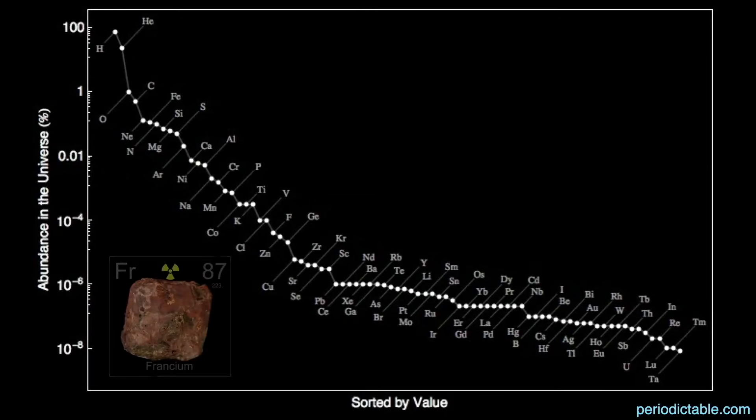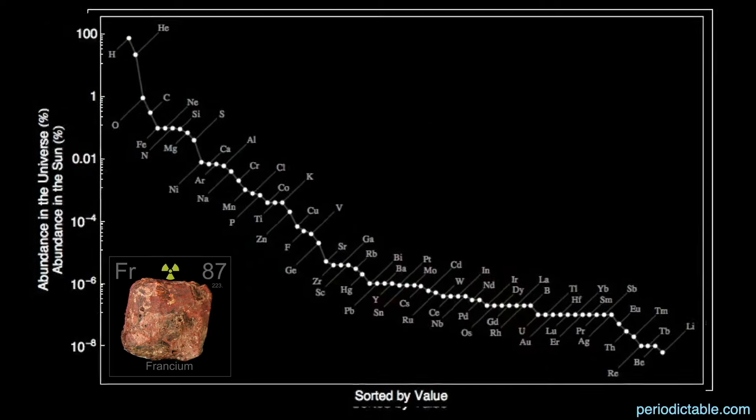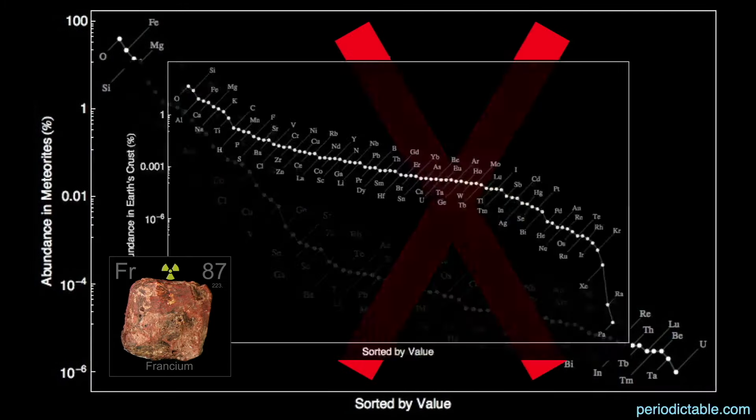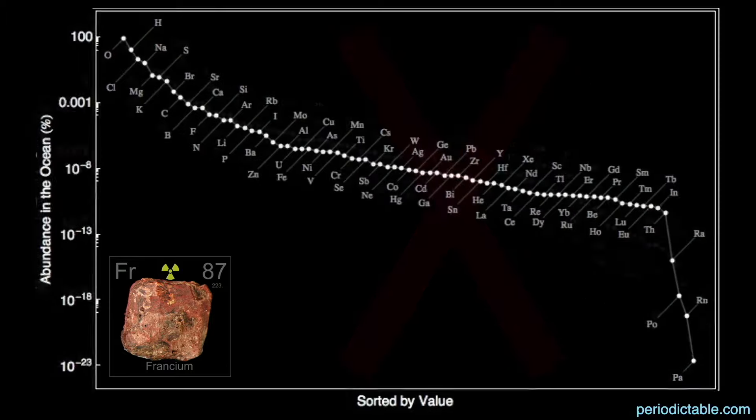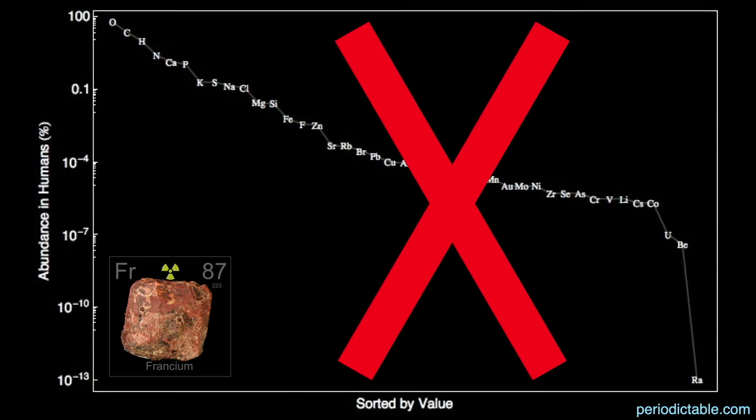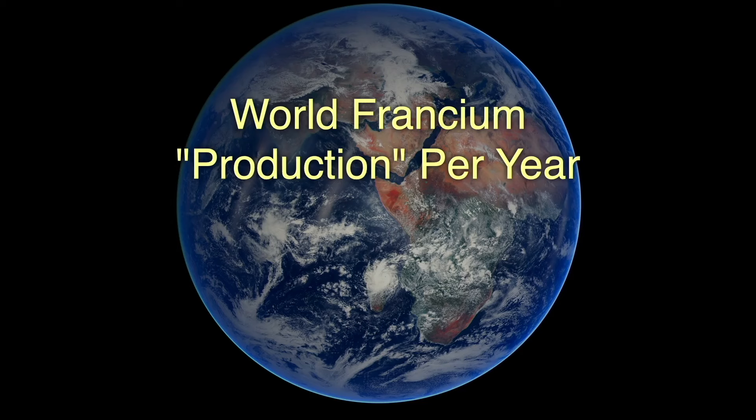I normally talk about the abundances of elements on this slide, but because of the short-lived radioactive nature of francium, there's not much to say here. There's really none to speak of in the universe, having all decayed away by now, and none in the sun for the same reason. Likewise, none in meteorites, and not enough in the earth to talk about except the tiny amount resulting from the decay of other elements. It's absent in the oceans, and of course, thankfully, none in us. That was a lot of red X's.